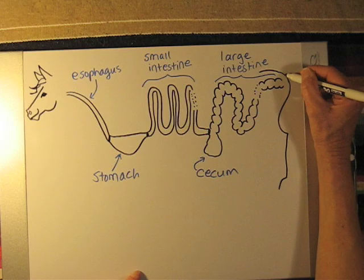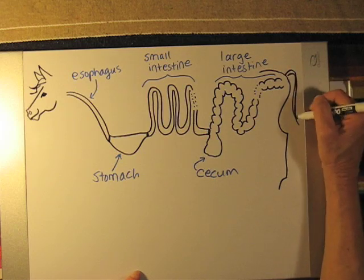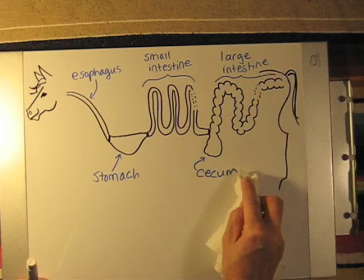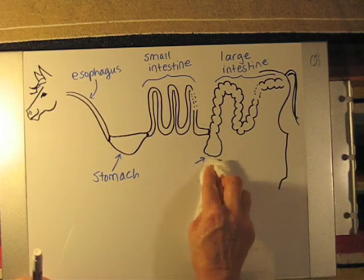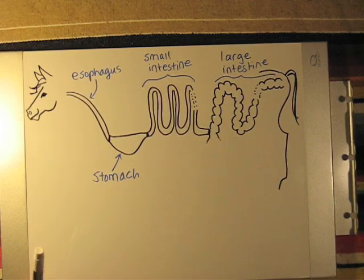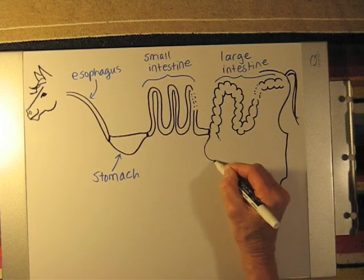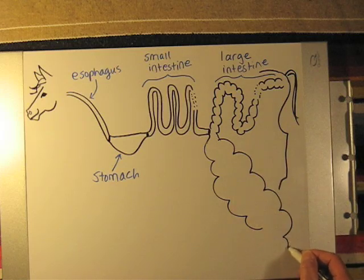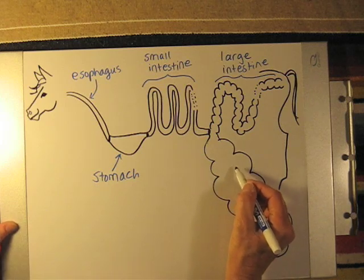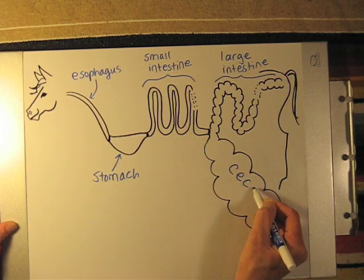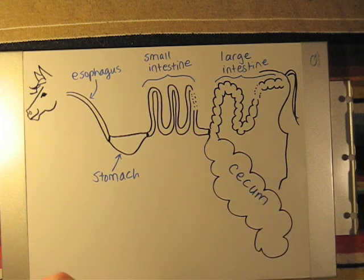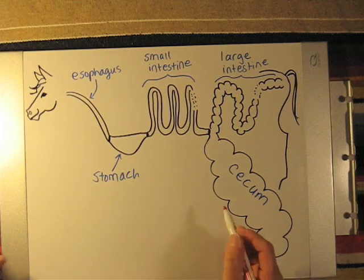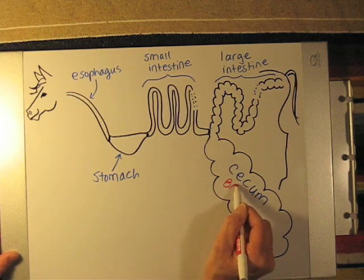The main difference between the horse, which is a hindgut fermenter, and the pig, which is a monogastric animal, is going to be the size and the functionality of the cecum. The cecum, which is located between the junction of the small intestine and large intestine, is very large in hindgut fermenters such as the horse. Inside the cecum there are beneficial bacteria that function to digest fiber, and that allows the horse to eat high fiber diets such as grass or hay.